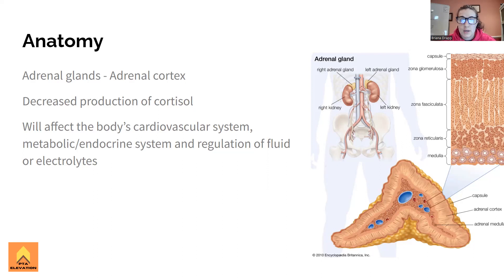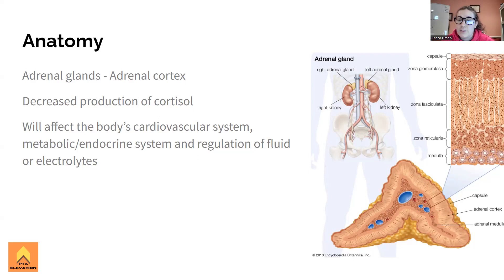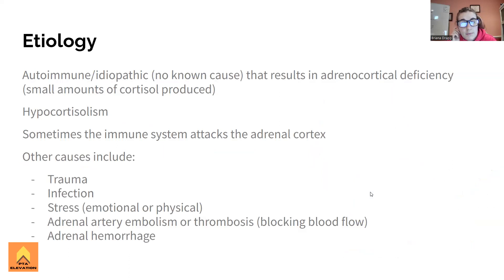When it comes to what's going on with Addison's disease, it is a decreased production of cortisol. Either the adrenal gland itself is just not going to produce cortisol - that's primary. If it was the anterior pituitary gland releasing ACTH, adrenal corticotropic hormone, and that's the one that stimulates the adrenal gland - if the pituitary gland has a problem secreting ACTH, then that's secondary hypocortisolism. All you need to know is that not enough cortisol is being produced, which will affect the body's cardiovascular, metabolic, endocrine systems, and fluid and electrolyte regulation.